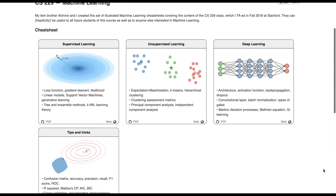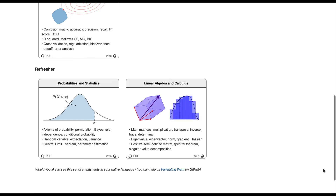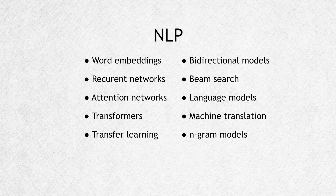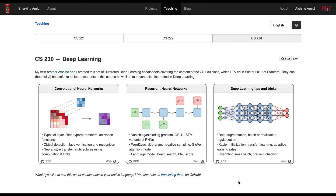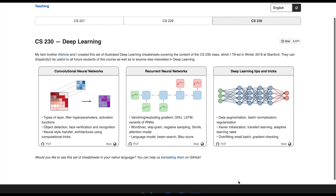To prepare for general ML I used an amazing study guide based on the Stanford CS229 course, which covers all these topics in a very compact way. For NLP I brushed up on concepts like embeddings, attention networks, recurrent networks, bidirectional models, machine translation, and n-gram models — the fundamental things in the NLP space — using a study guide based on the Stanford CS224N course.